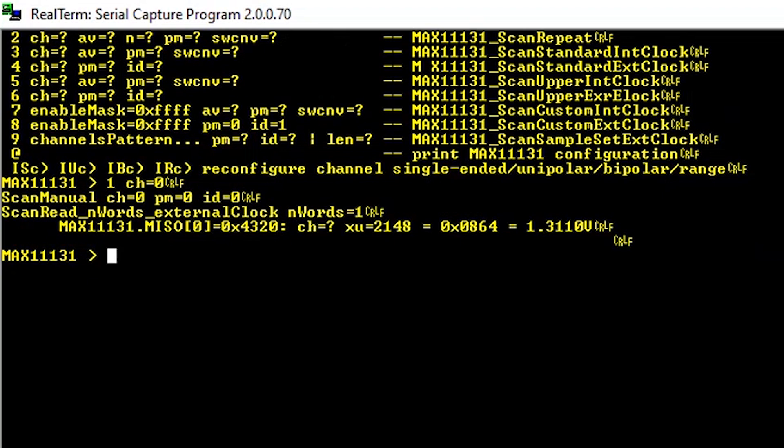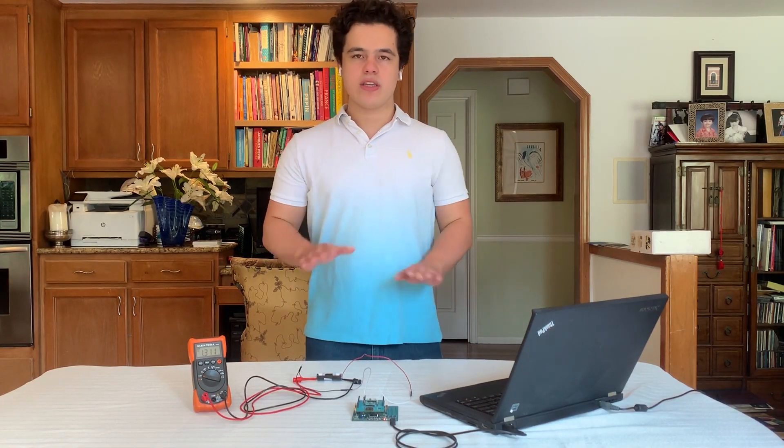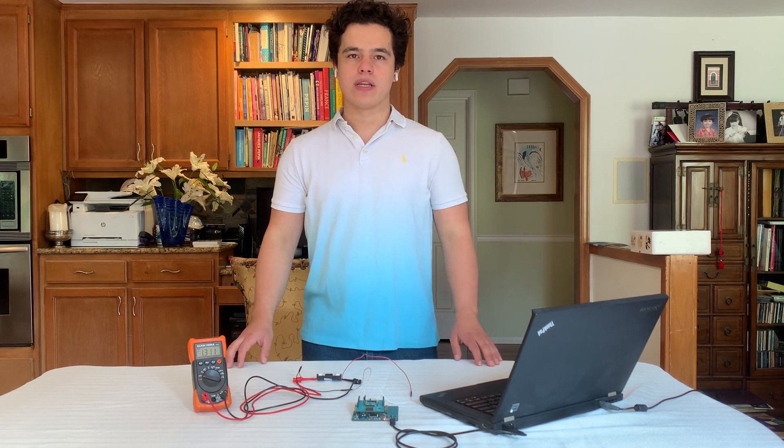So if we press enter on that, as you can see, we get a reading of 1.311 volts, exactly what our multimeter reads. So as you can see, it's super easy to get this development board up and running.